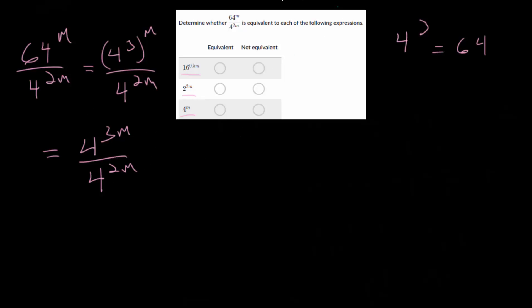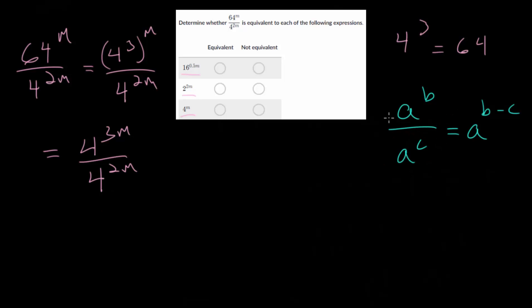A rule we haven't used yet is that if we have a quotient — a to the b divided by a to the c — when the base is the same, you subtract the exponents. So this is a to the b minus c. This is very similar to the product rule where you add exponents; in fact, you could rewrite the denominator as a to the negative c in the numerator and apply the product rule, just adding negative c. Applying this rule here — they have the same base — we subtract the exponents: 4 to the 3m minus 2m. And 3m minus 2m is just m. So the bottom answer choice is correct — it is equivalent.